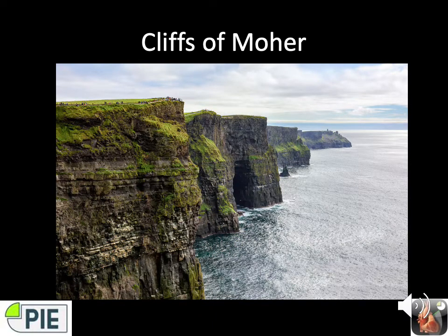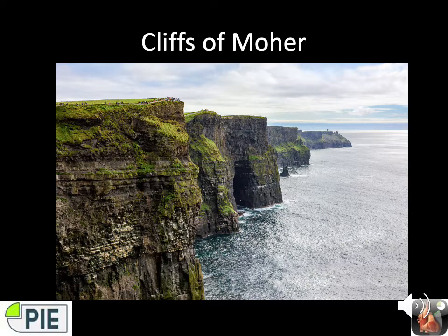Before moving on to our next segment, a brief note about the Cliffs of Moher — Ireland's most visited natural attraction, with over 1.5 million tourists visiting each year. Located on the wild Atlantic Way in County Clare, they ascend to over 200 meters and stretch south for eight kilometers to Hag's Head. The oldest layers of base rock are over 300 million years old. A sea cave there was used to film scenes in Harry Potter and the Half-Blood Prince, and the cliffs also appeared in The Princess Bride.